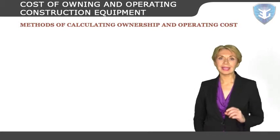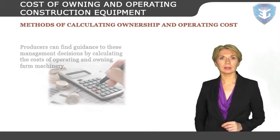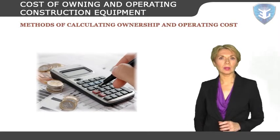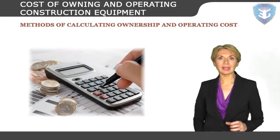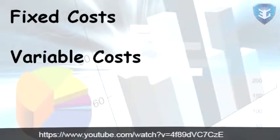Producers can find guidance for management decisions by calculating the costs of operating and owning equipment. The best source of information is actual farm-level records, but in their absence, calculation methods can be used to estimate costs. Business costs are often classified as either fixed or variable in relation to sales performance. If a cost remains constant regardless of how well the business is doing, it is fixed; if it increases when things get busy, it is variable.